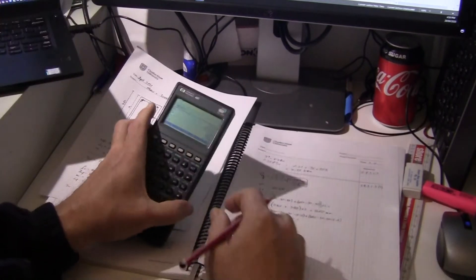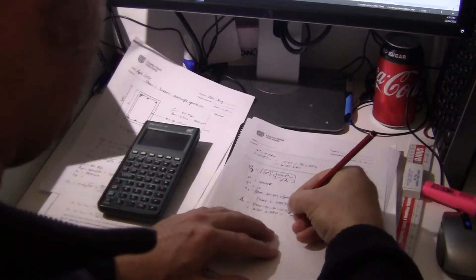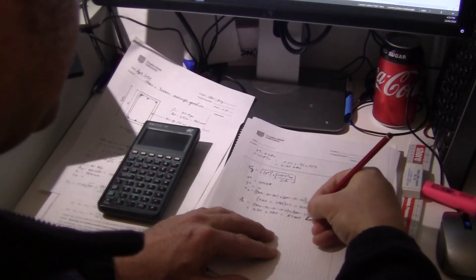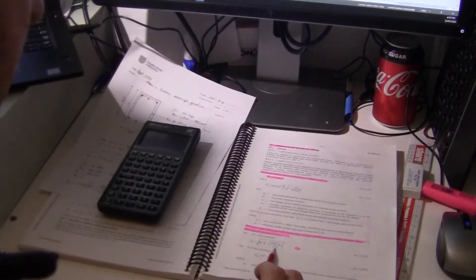230 times 380 which is 87,400 square millimeters. Okay, that's the AO. That's that character right there.